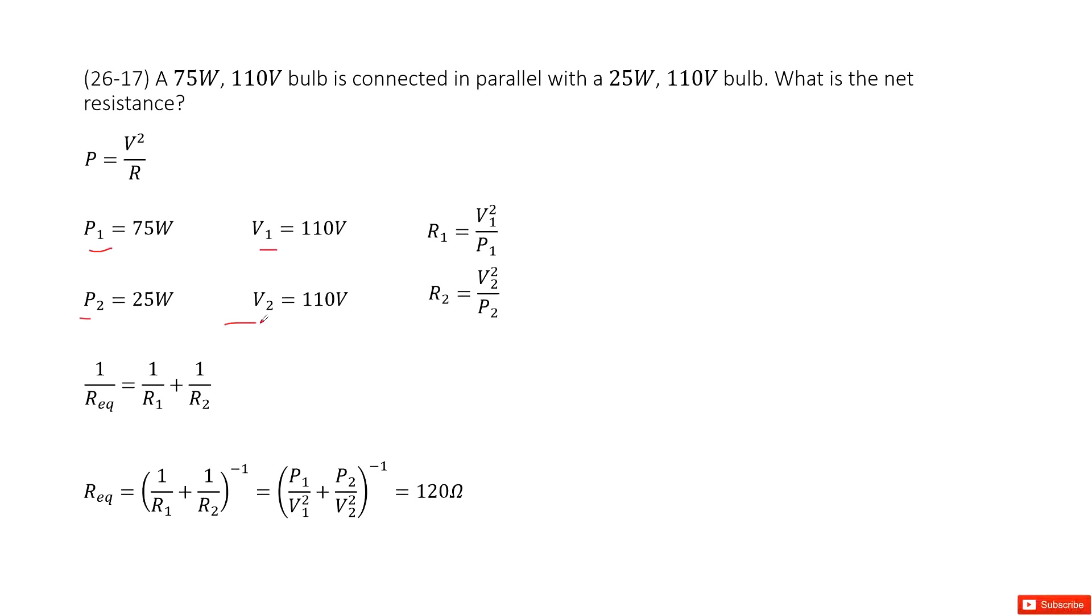We know these two light bulbs are connected in parallel. We need to find the net resistance, that is, equivalent resistance for this parallel connection. So easy, right? We know the equations for parallel connection look like this one. This is the R equivalent: 1 over R equivalent should be equal to 1 over R1 plus 1 over R2.